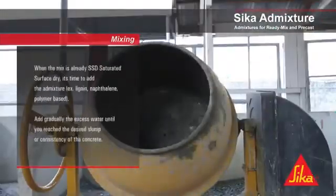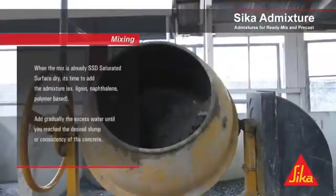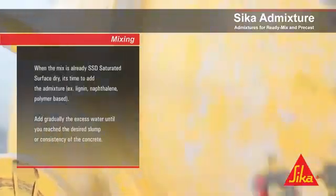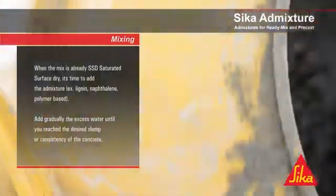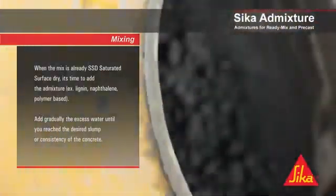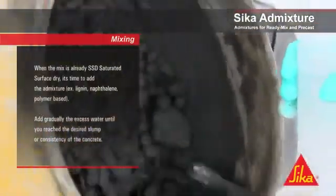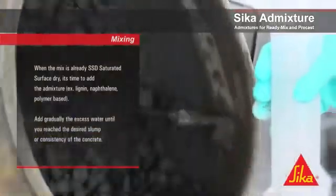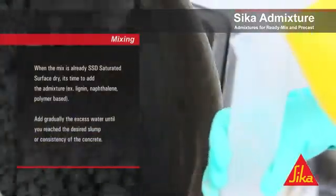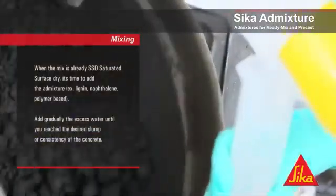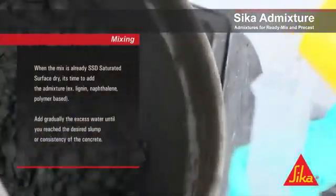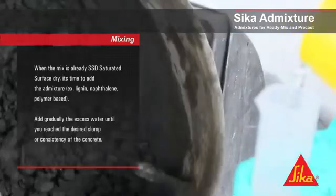When the mix is already at saturated surface dry condition, it's time to add the admixture — for example, lignin, naphthalene, or polymer base. Then gradually add the remaining water until you reach the desired slump or consistency of the concrete.